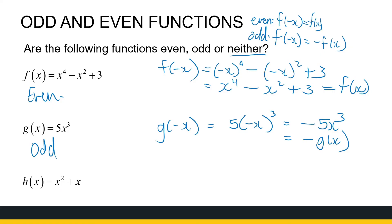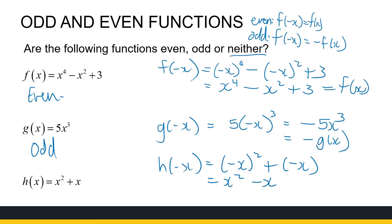And the last one: h of x equals x squared plus x. H of minus x is minus x squared plus minus x, which gives x squared minus x. That's not equal to h of x, and it's not equal to minus h of x. So this one is neither even nor odd. To test for even and odd, we can do it algebraically, and we can also see visually what even and odd functions look like.